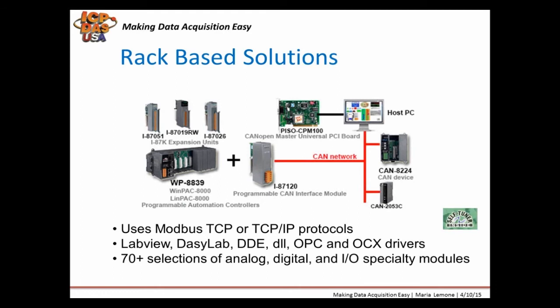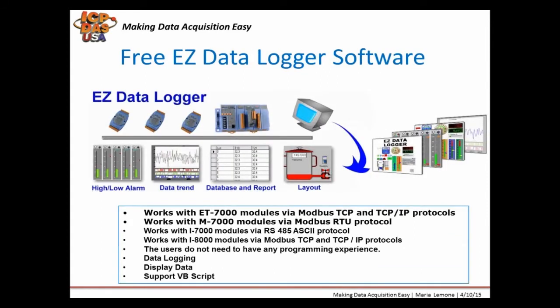Our rack-based data acquisition IO products can be used with free EasyDataLogger software. EasyDataLogger is very easy-to-use data logging, data acquisition, control, and monitoring software. You can log data from data acquisition hardware like data loggers and remote IO modules, based on configurable time intervals like 10 samples per second. The data can be stored in Access or MySQL database and can be exported to Excel spreadsheets or reports. You can log as much data as you need depending on the memory size of your computer system. You can send out email alarms based on conditions like when a tank level, pressure measurement, or flow rate is over a preset desired level. EasyDataLogger is designed for small remote IO systems with up to 64 IO tags.